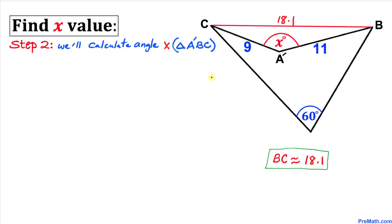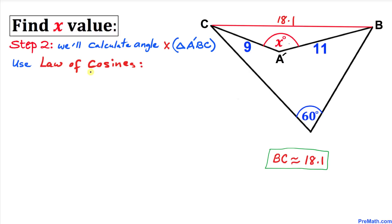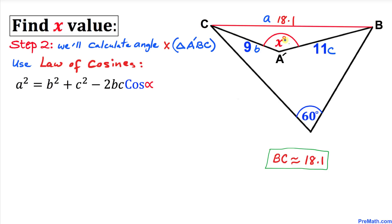Now let's focus on the new triangle formed by points A', B, and C. We are going to calculate angle x. We will use the Law of Cosines once again. In this triangle, I'll call one side a, another side b, another side c, and the angle x plays the role of alpha.